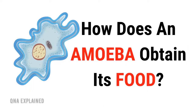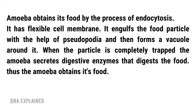How does an amoeba obtain its food? Amoeba obtains its food by the process of endocytosis. It has a flexible cell membrane and angles the food particle with the help of pseudopodia, then forms a vacuole around it.